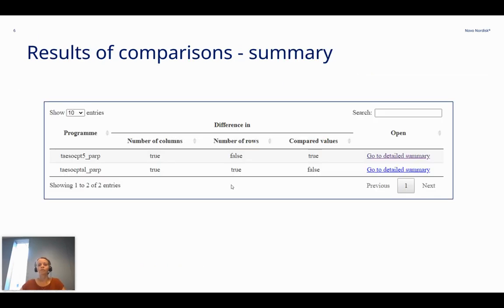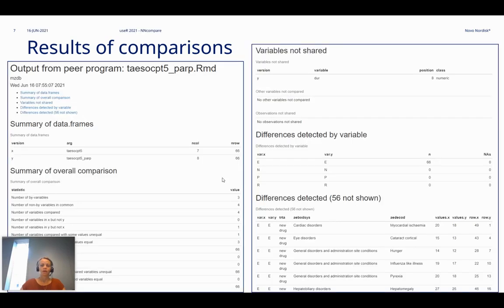This is a summary report that shows where differences are detected in the number of columns, rows, or in any of the compared values of the two data frames, and furthermore, it contains links to the detailed summary reports. Here's an example of a detailed summary report. In this, you can see that there are differences detected in the number of columns in the two data frames, and furthermore, it shows differences detected in the E variable and also some details about these differences.